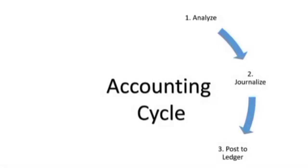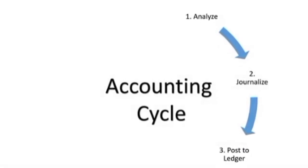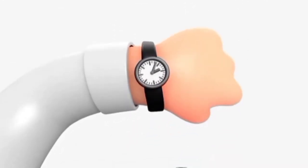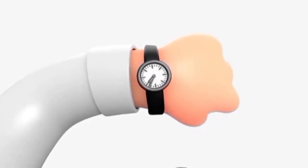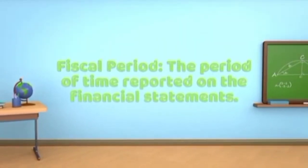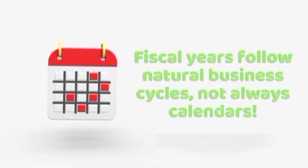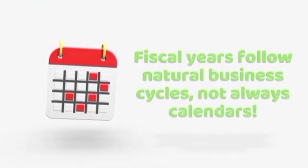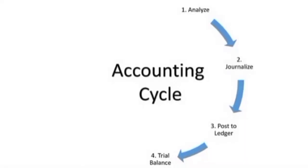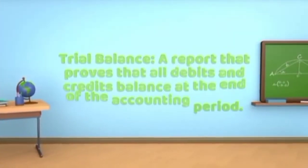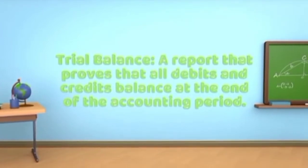Up to this point, we have learned how to analyze transactions and identify their debits and credits. We've also learned how to journalize these transactions and post them to the general ledger. These first steps of the accounting cycle are repeated every day until the end of the fiscal period when financial statements are created. A fiscal period is a period of time reported on the financial statements, which is typically a 12-month year. The first step in ending your year is to create a trial balance report.